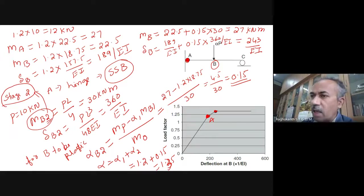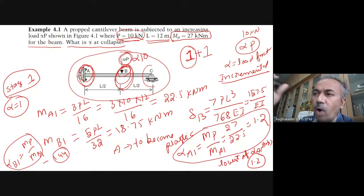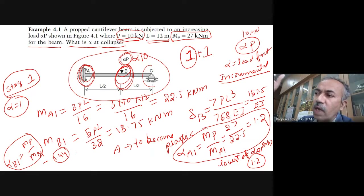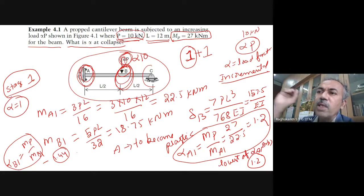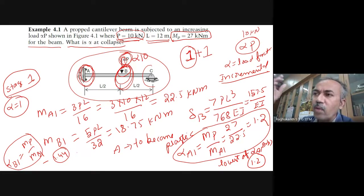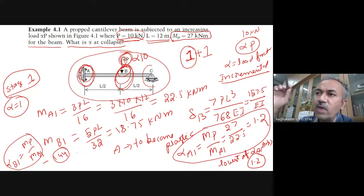If you want to find out load factors, you can use alpha, where P is the working load and alpha is the load factor — how much alpha value causes the beam or structure to collapse. The same incremental procedure can be made systematic: find bending moments, find alpha, which is the ratio of plastic moment to the bending moment at that point.